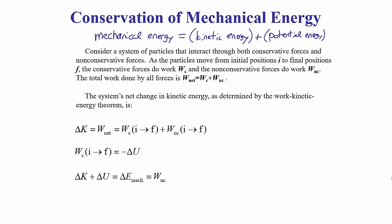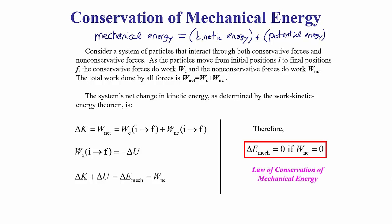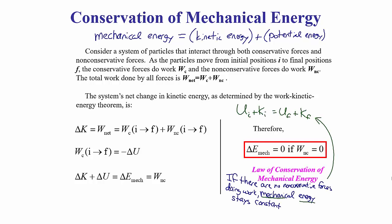Plugging in negative ΔU for the work done by conservative forces gives us ΔK equals negative ΔU plus the work done by non-conservative forces. Taking ΔU to the other side makes it positive, so the change in kinetic energy plus the change in potential energy equals the work done by the non-conservative forces. Since KE and PE are the two pieces of mechanical energy, this means the change in mechanical energy equals the work done by non-conservative forces. If there are no non-conservative forces doing work, the mechanical energy stays constant — this is the law of conservation of mechanical energy.